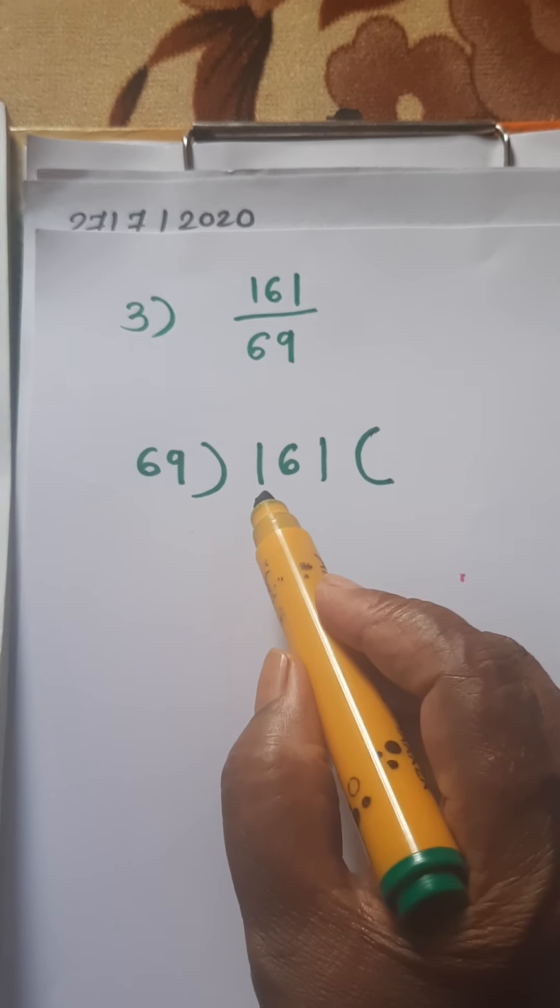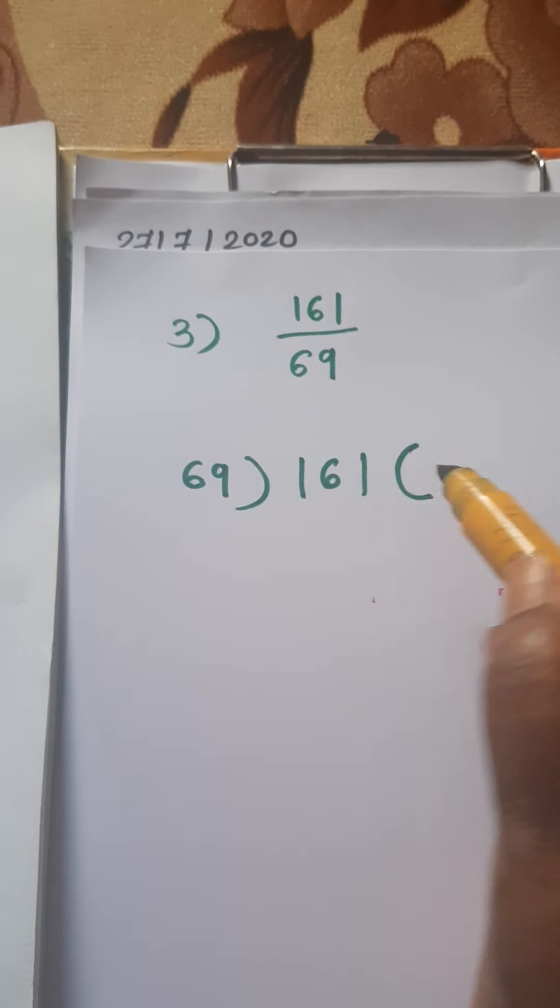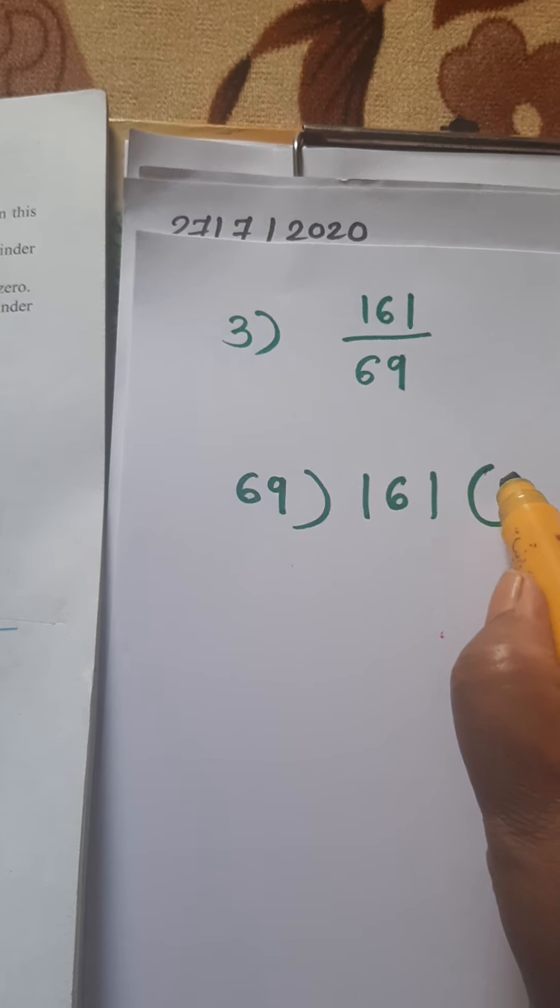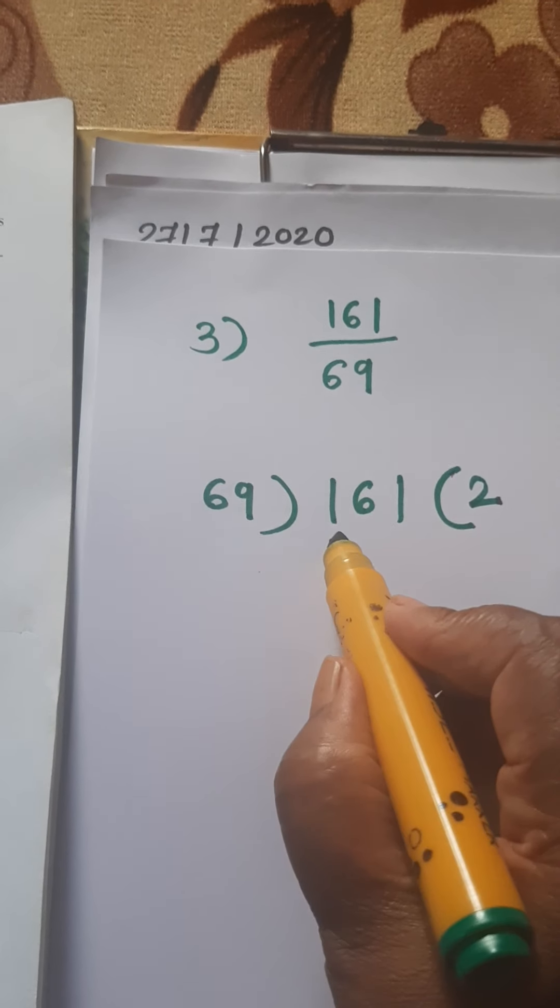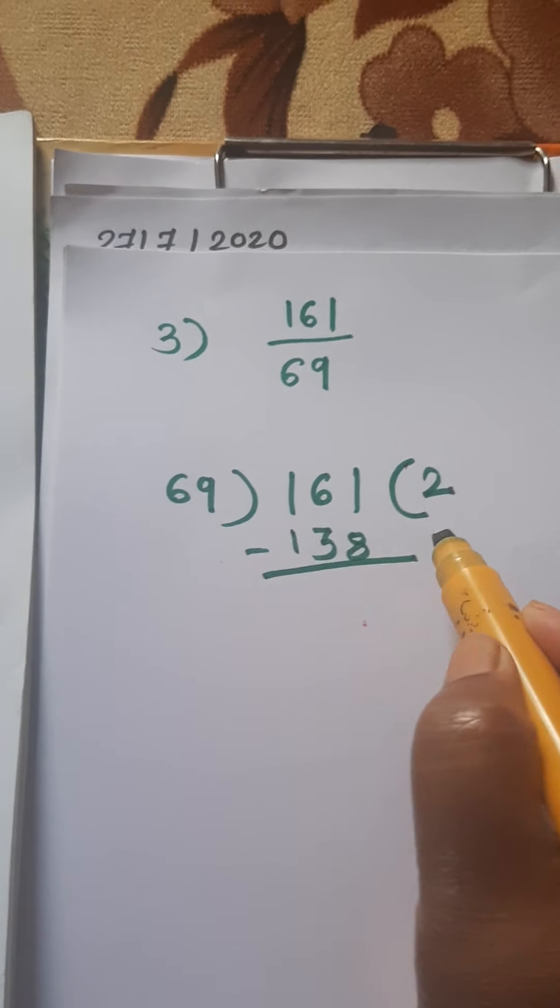But 207 is bigger than 161, so we can't divide by 3. So write here 2. 69 twos are 138. Do the subtraction here.